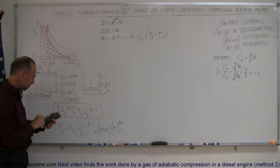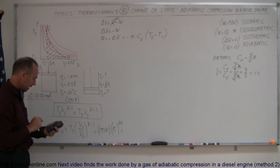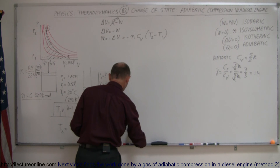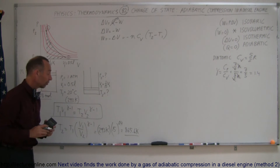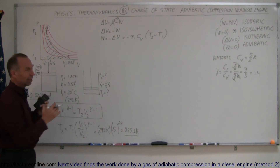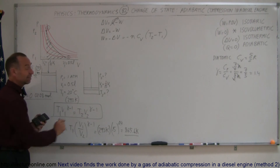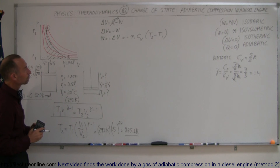Plugging in: T2 equals 293 Kelvin times 15 raised to the 0.4 power, giving us 865.6 Kelvin. That's the temperature after the gas is compressed. So not only does the engine compress the gas to 1/15th of its original volume, but the temperature goes quite high — this is the compression stroke of a diesel engine.